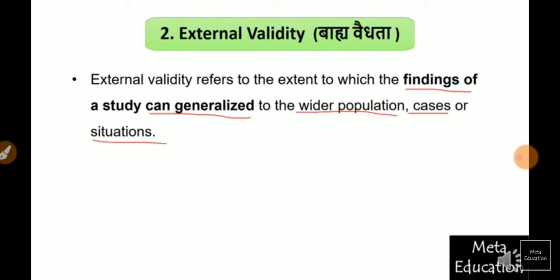What we said about internal validity is that the population, scenario, environment, and all conditions were the same and the sample size was the same, giving us the same results. But if we are saying that our study is externally valid, then the findings and conclusions can be generalized. Whether we have done research with a sample of 60 or 100 students, we can say the same results would apply to the wider population. If the same conditions apply to a wider population, we will see the same results, and then we can say our research is externally valid.